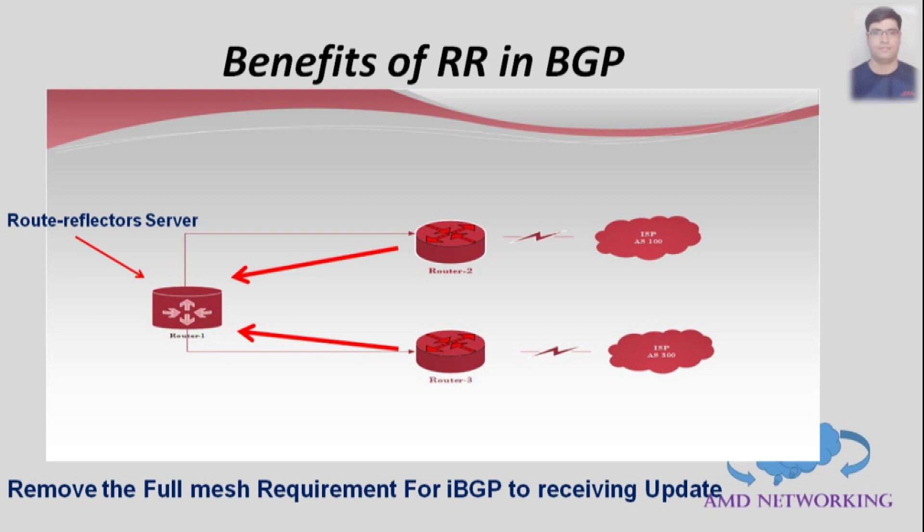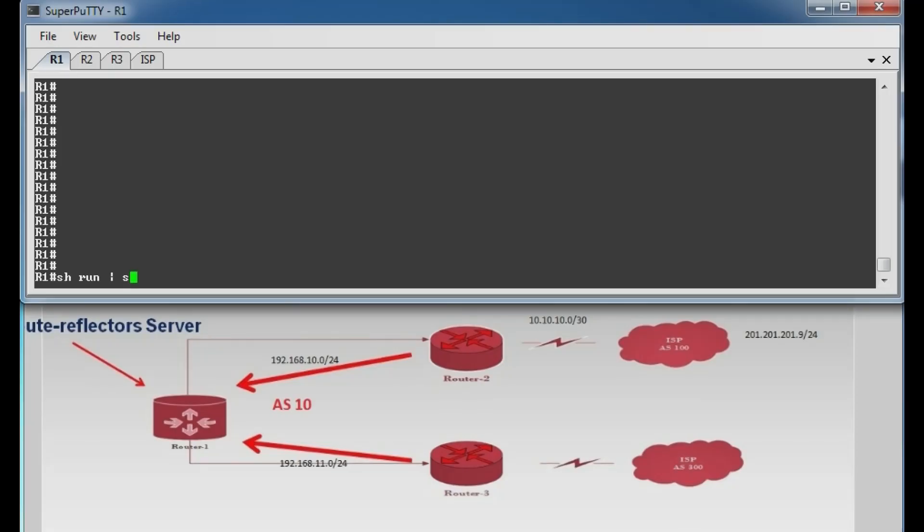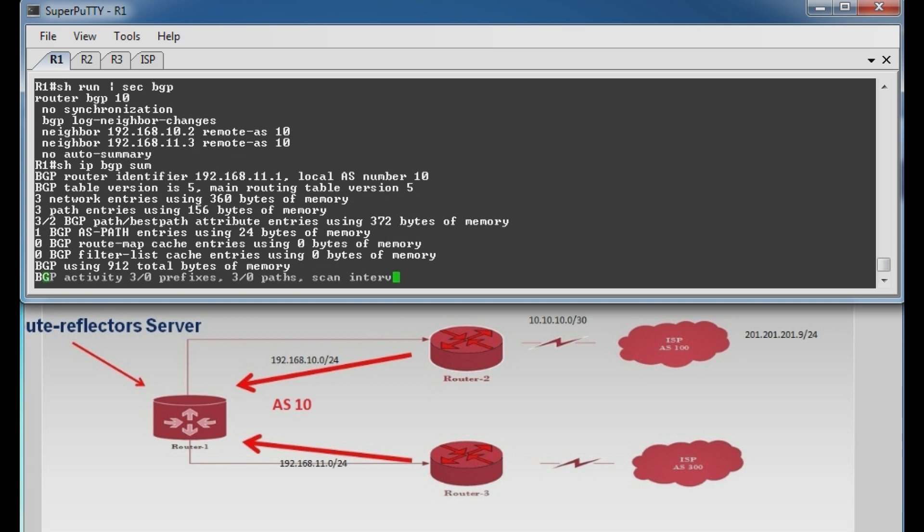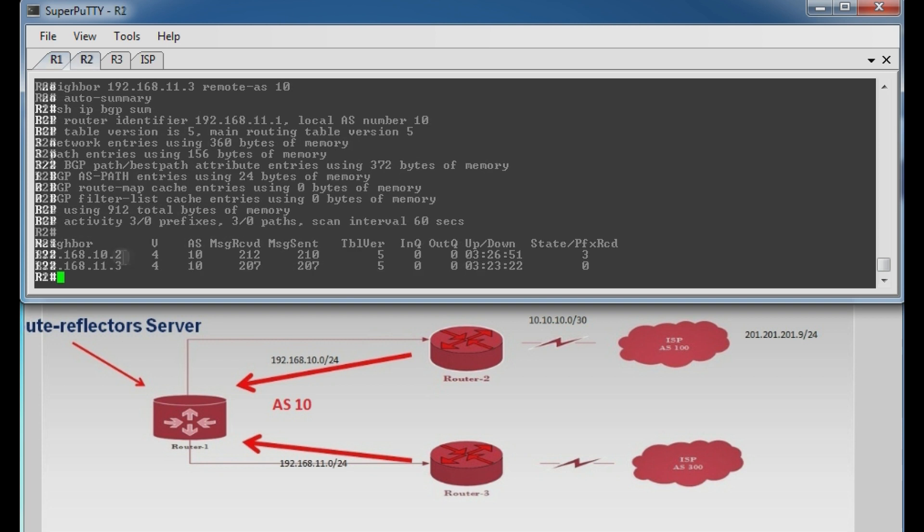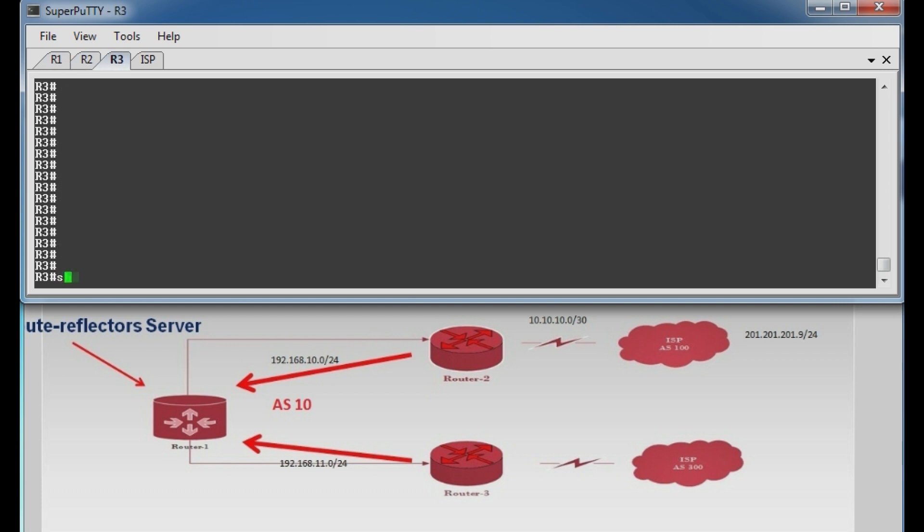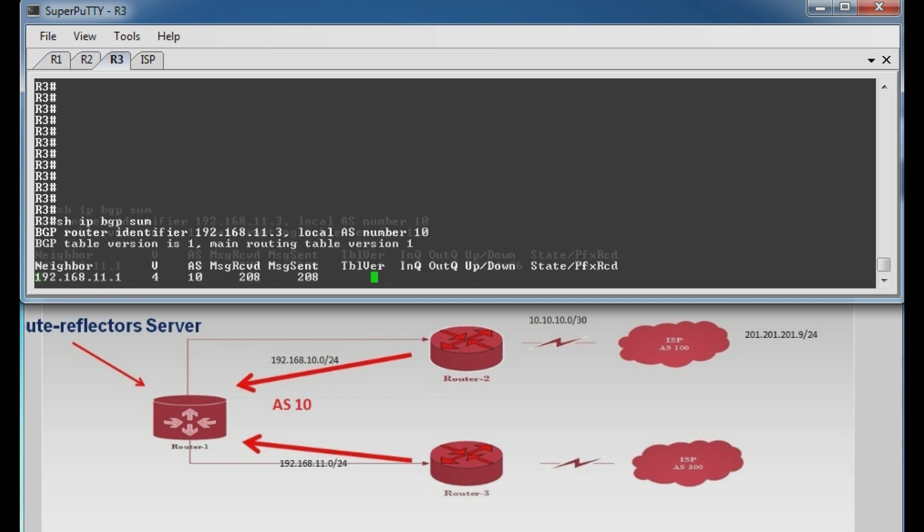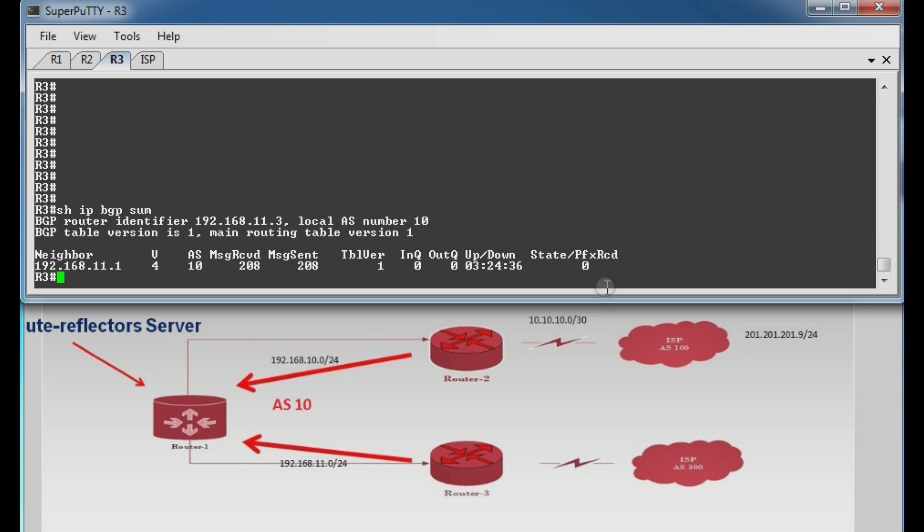Now we will take console of router 1, router 2, and router 3 to configure route reflector server and client configuration. Let's check first configuration part. Router 1 is established peer with router 2 and 3. Router 1 receives 3 prefixes from router 2 and it does not forward to router 3 because of BGP split horizon issue.